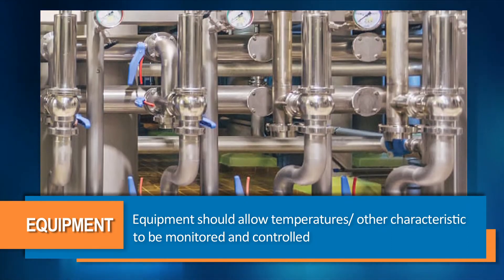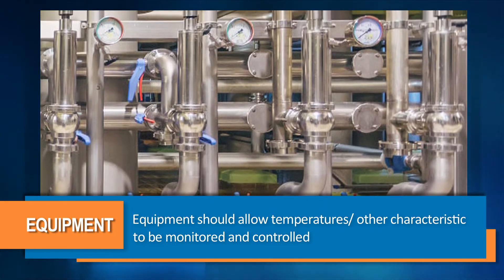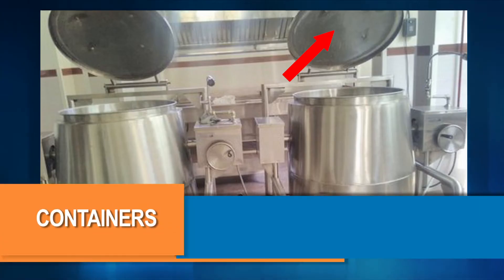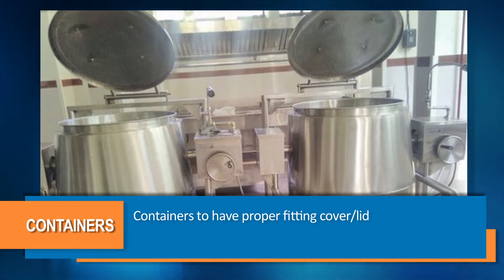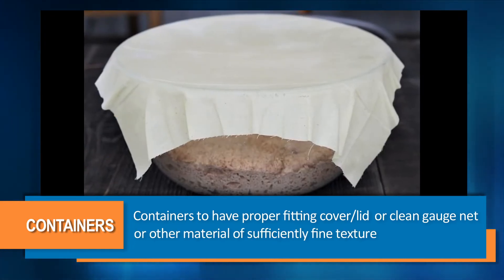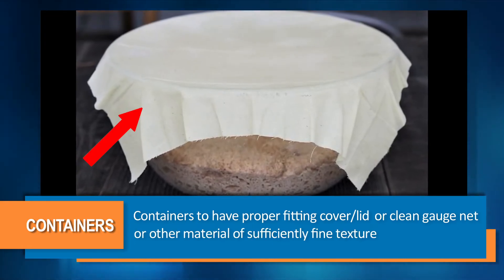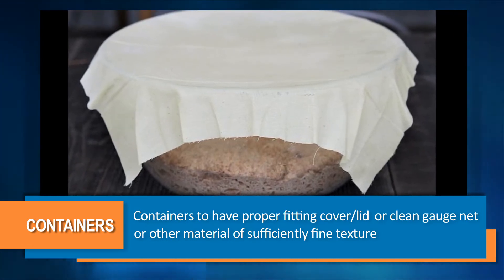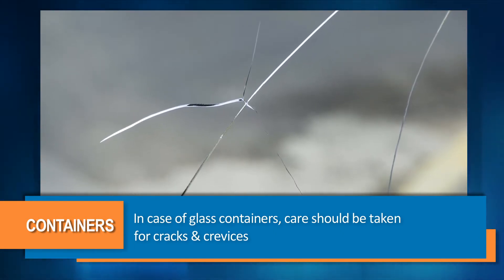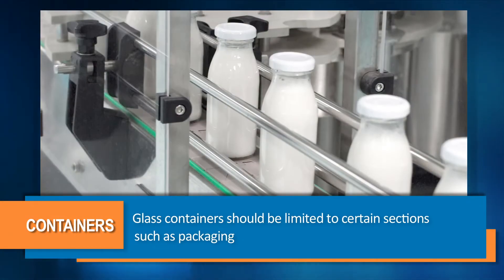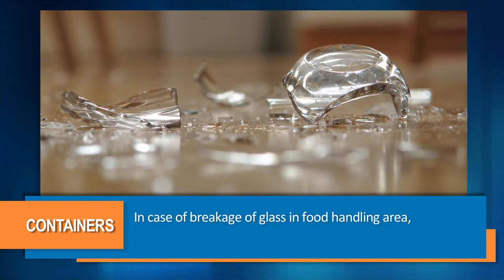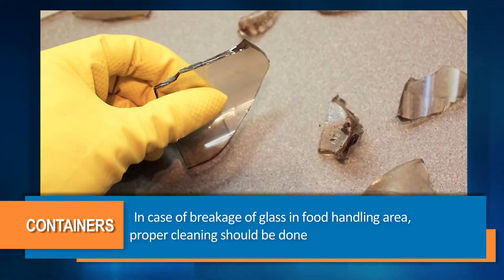The design of the equipment should allow temperatures to be monitored and controlled, and any other characteristics likely to have a detrimental effect on the safety or suitability of food. Containers should be provided with proper fitting cover or lid, or with a clean gauge net or other material of sufficiently fine texture to protect the contents completely from dust, dirt, etc. In case of glass containers, care should be taken for cracks, and in case of breakage of glass in food handling area, proper cleaning should be done.